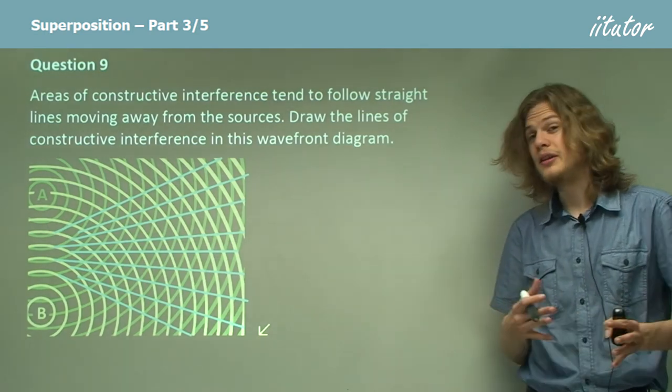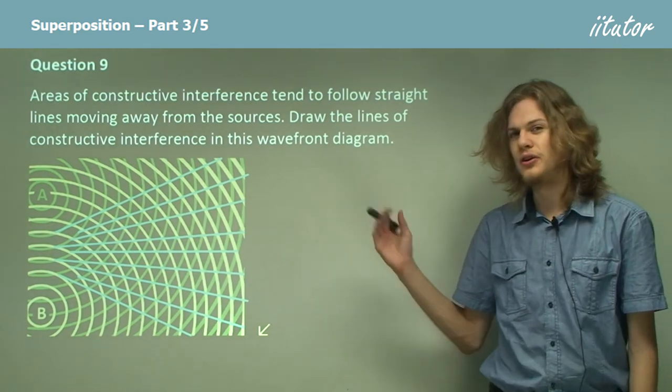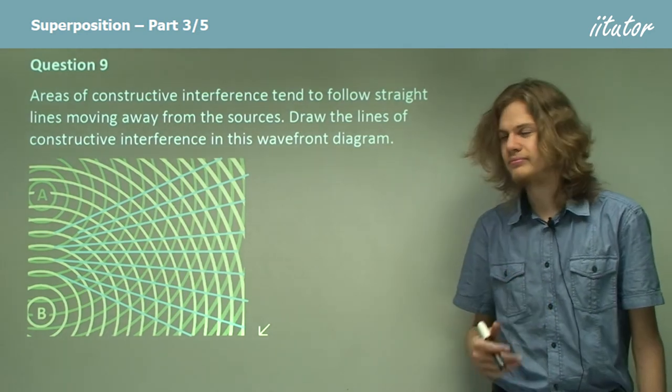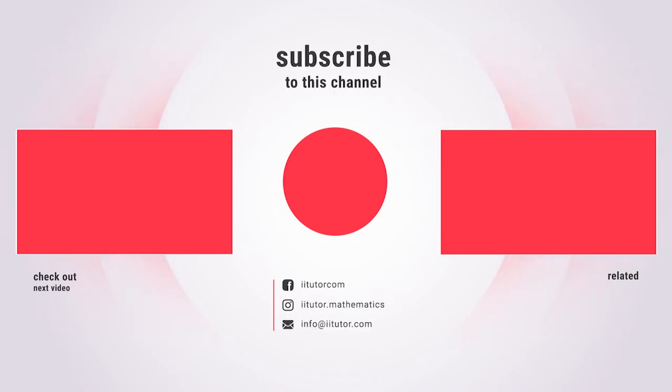Directly in between these lines of constructive interference we in fact get lines of destructive interference where the amplitude of the wave is very low.